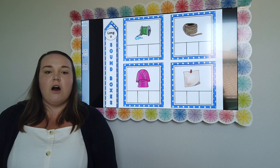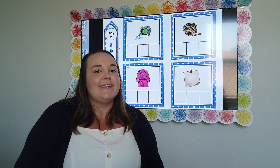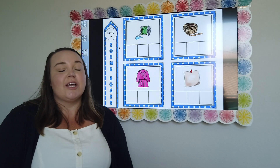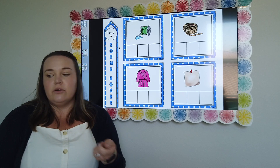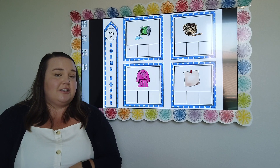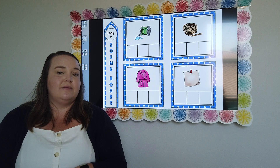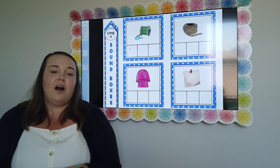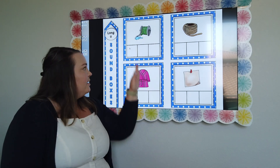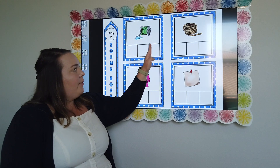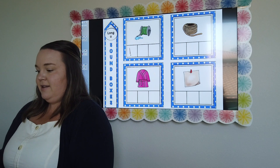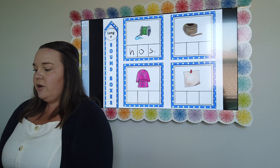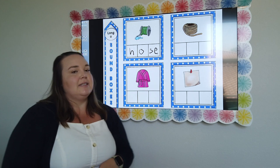Moving on to our long O — our target sound we're listening for is O. Can you name this picture? It's a hose, like a garden hose. Do you hear the target sound in hose? How many sounds do you hear total? And what letter makes each sound? Hose: H, O, S. Let's write it in here: H, O, S. We know we have that magic E that is making that O say its name.